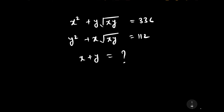Welcome to our YouTube channel Saval Bawal. Our question is: x squared plus y times the square root of xy is equal to 336, and the second equation is y squared plus x times the square root of xy is equal to 112. We have to find the value of x plus y.